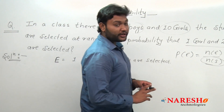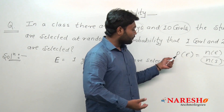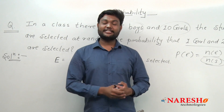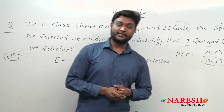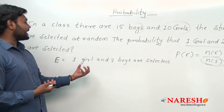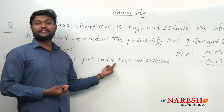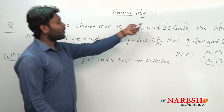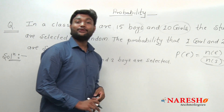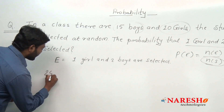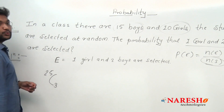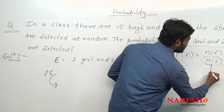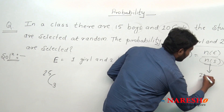My dear student, if we look at the formula of probability — probability of event is equal to number of event upon number of sample space — let us first calculate the total number of sample space. We have to select one girl and two boys, meaning total number of candidates selected is three. We have 15 boys and 10 girls, so 15 plus 10 equals 25. Among 25, we have to choose three students. So the total number of sample space is 25C3.